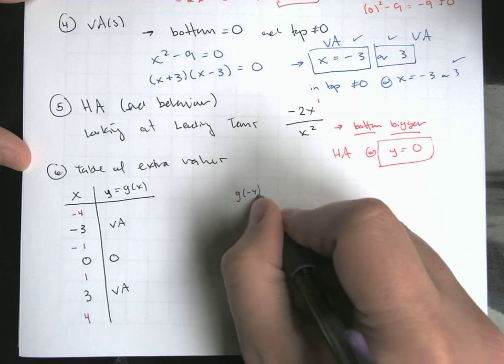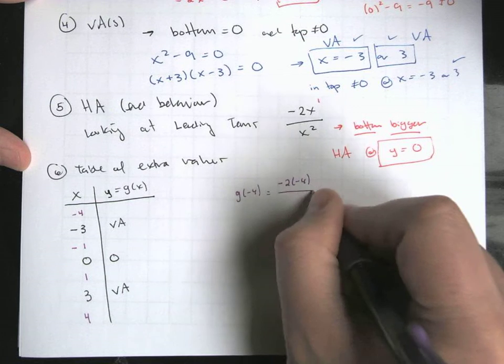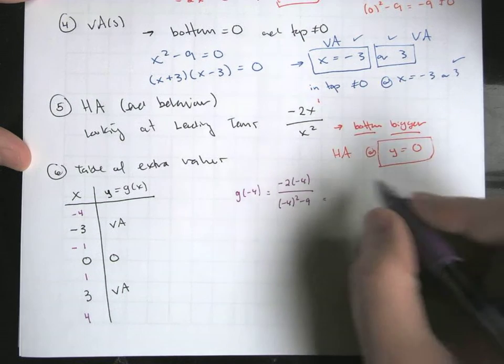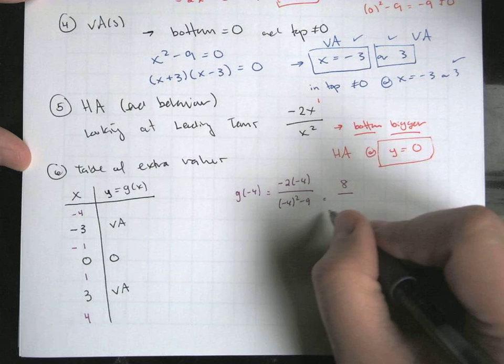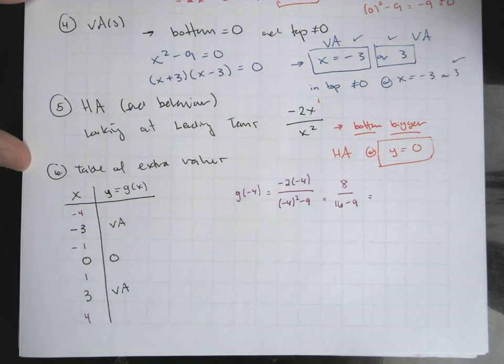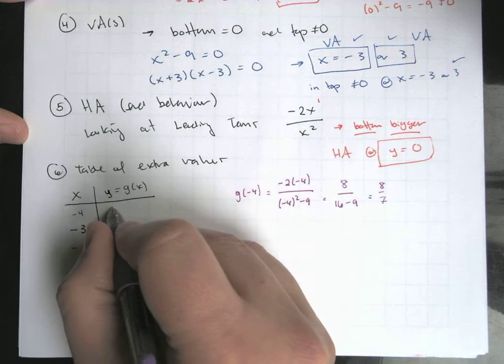So negative two times negative four, negative four squared minus nine. What are we going to get here? This is eight. This would be 16 minus nine. So this is going to be what? A positive eight over seven. Okay.